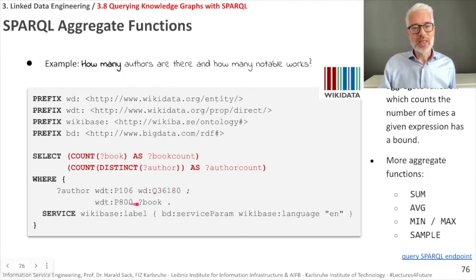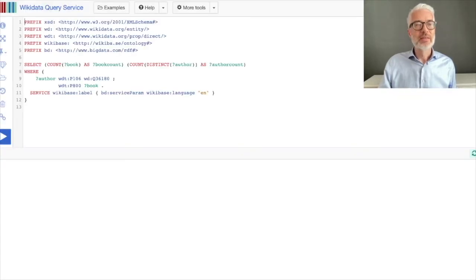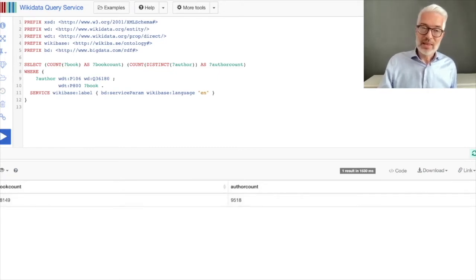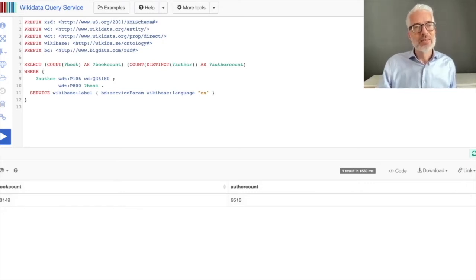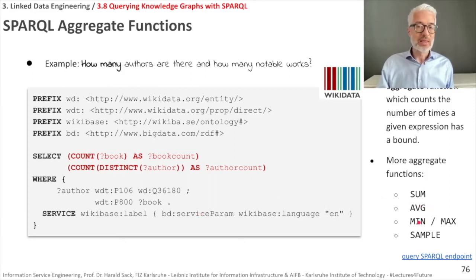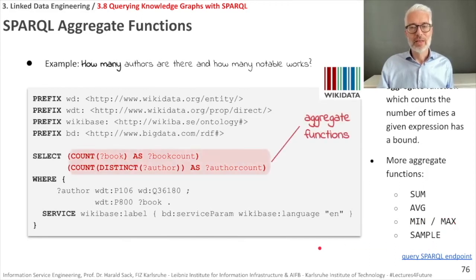There are more aggregation functions: you cannot only count — if there are numbers, you can sum them with SUM, average them with AVG, find the minimum and maximum with MIN and MAX, or choose an arbitrary sample entry. That was the aggregate part.